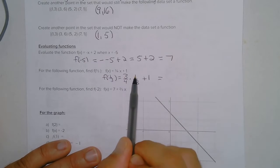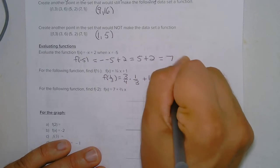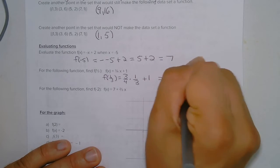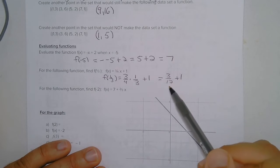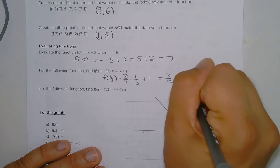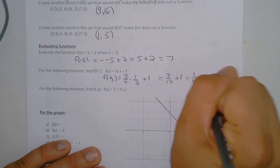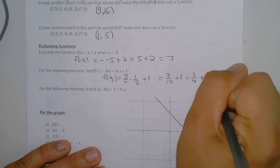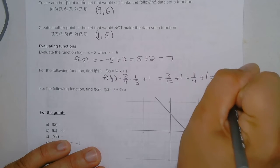So in multiplying that, that would be 3 over 12 plus 1. And 3 over 12 reduces to 1 fourth plus 1, which is equal to 1 and 1 fourth.